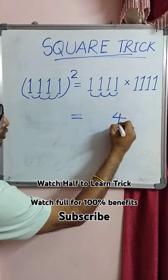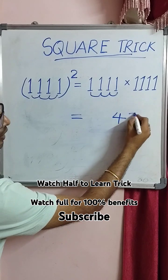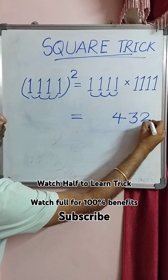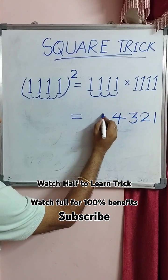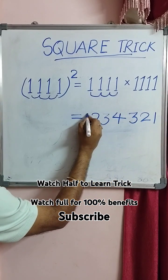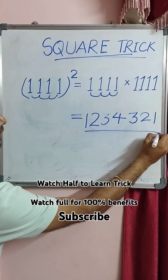So write at the center of the answer four, and after four you write descending number three, two, one. And before four you write again three, two, one, and your answer is ready.